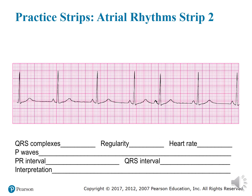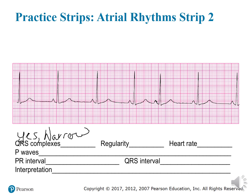Let's take a look at this next rhythm and ask those questions again. Are there any QRS complexes? Yes. Are they uniformly shaped or varied? They're narrow, but they are uniformly shaped.